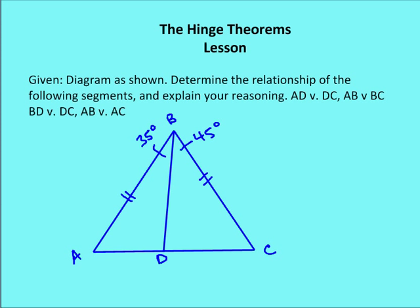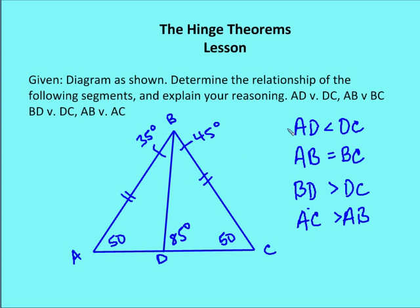We're back. I have an isosceles triangle, so I know the base angles are going to be congruent — because if the sides are congruent, the angles opposite them are congruent. We're given that angle ABD is 35 degrees and angle DBC is 45 degrees, so the sum of those two angles gives us angle ABC equal to 80 degrees. Since the angles of a triangle sum to 180 degrees, we're left with 100 degrees divided by 2, giving us 50 degrees for both angle A and angle C. Also, since DBC is 45 degrees, angle BDC is 85 degrees.